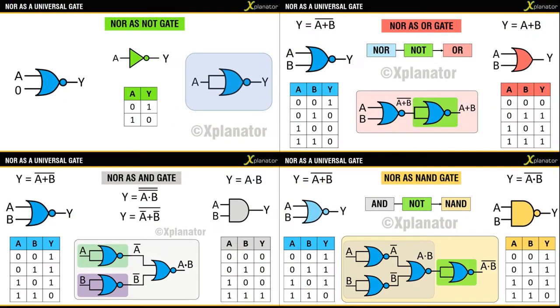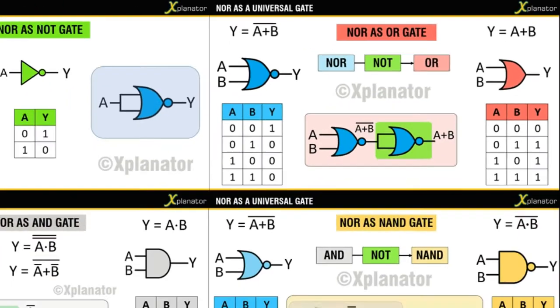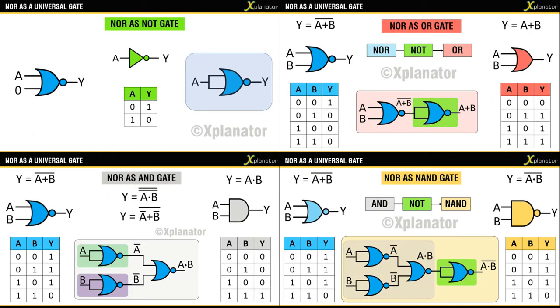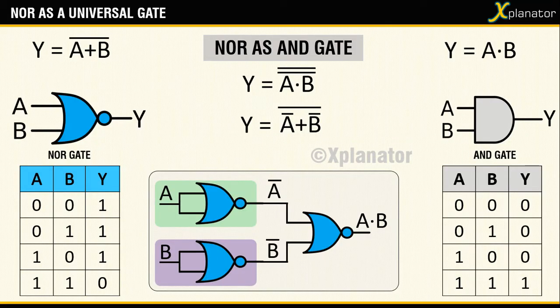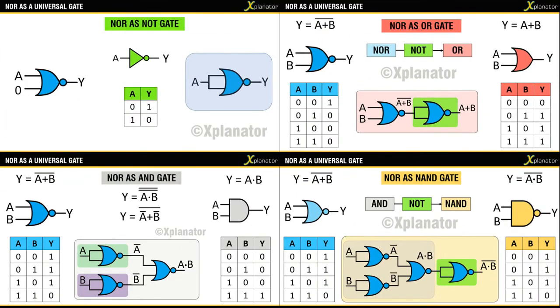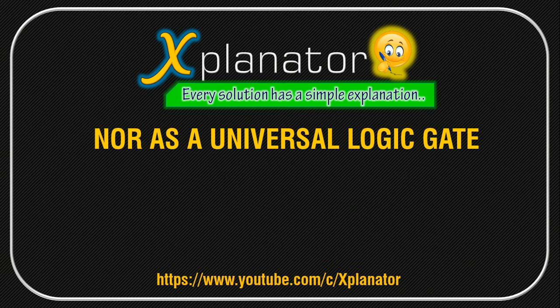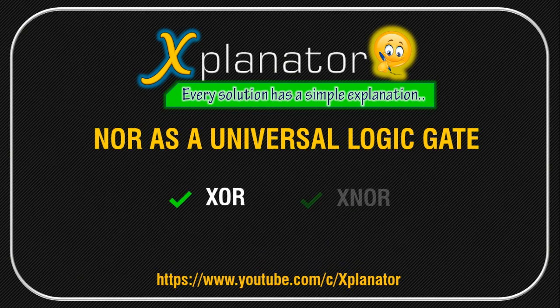In the earlier videos we saw how to use NOR as NOT gate and OR gate, and later in the second video the use of NOR as AND as well as NAND gate was seen. Links to those videos are in the description box below. In today's video we will see how to use NOR to create XOR and XNOR gates.